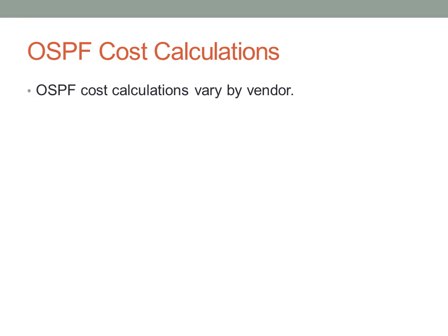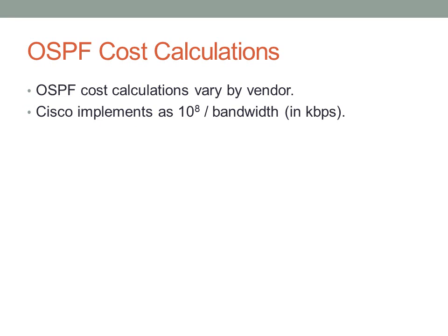OSPF cost calculations vary by vendor, but with Cisco products it's 10 to the 8th divided by the bandwidth in kilobits per second — that's your cost, which is the inverse of bandwidth. Higher bandwidth interfaces result in a lower cost. Note that 10 to the 8th is 100 Mbps, the reference bandwidth. This causes issues with gigabit links: dividing 10^8 by 10^9 gives a number less than 1, so the router rounds up to 1. By default, 100 Mbps links have the same OSPF cost as gigabit links. You can adjust that reference bandwidth with a command.